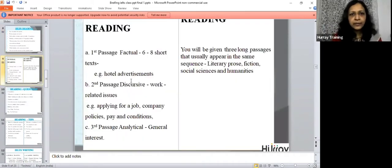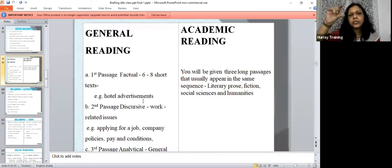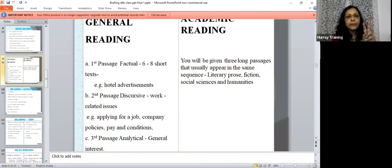You'll have a first paragraph for general reading where you will have two texts, two passages, sometimes smaller boxes of seven or eight advertisements, maybe on hotel or any other advertisements. The paragraph B for general second passage would be of discursive nature, be more work related issues. And section three, it would be more of analytical nature. And that would be of a topic of general interest.